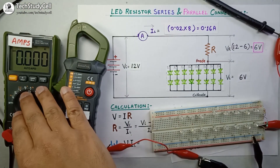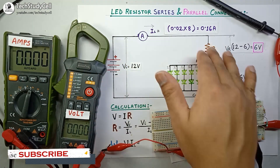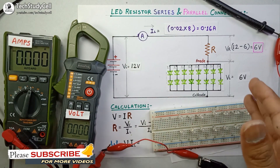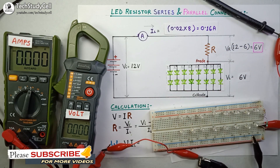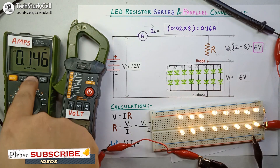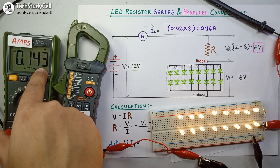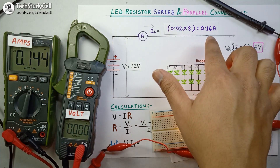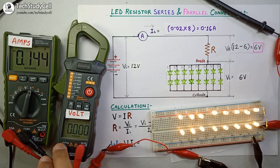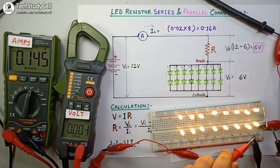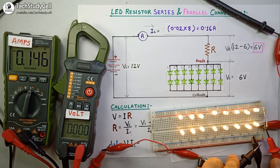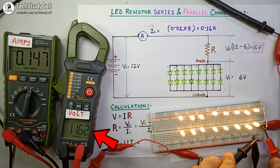I have connected the multimeter to measure the current through the circuit, and I will use the clamp meter to measure the voltage across the resistance and the LEDs. Let me turn on the supply. The multimeter is showing a current reading of 0.143 amperes, which is very close to our calculated value of 0.16 amperes. Now we will measure the voltage across the supply — it should be close to 12 volts. The clamp meter is showing 11.6 volts as the input voltage of the circuit.